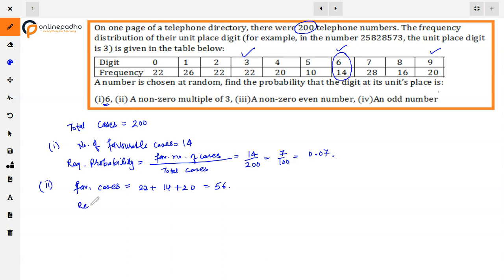In this case, the required probability is 56 by 200, which is 28 by 100, or 0.28.